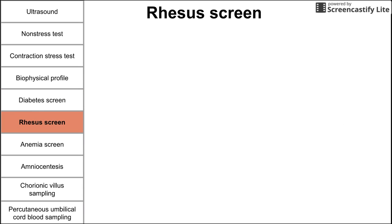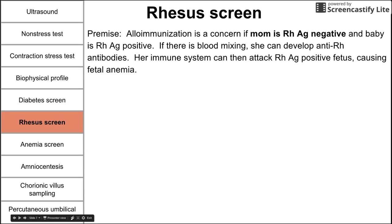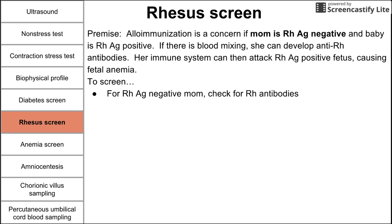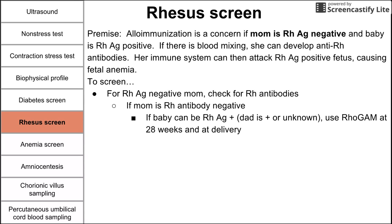Another screen during pregnancy is the rhesus screen. Alloimmunization is a concern if mom is Rh antigen negative and baby is Rh antigen positive. If there is any blood mixing, mom can develop anti-Rh antibodies, and her immune system can then attack an Rh antigen positive fetus, causing fetal anemia. To screen, you first confirm mom is Rh antigen negative — otherwise this screen isn't needed — and check for Rh antibodies. If mom is Rh antibody negative and dad is Rh antigen positive or unknown, you use RhoGAM at 28 weeks and at delivery.